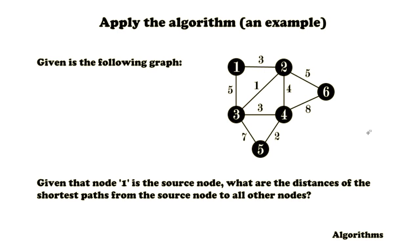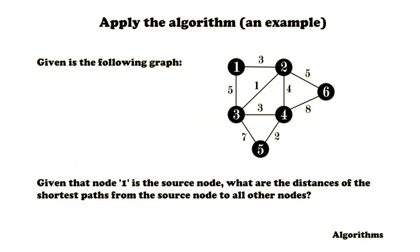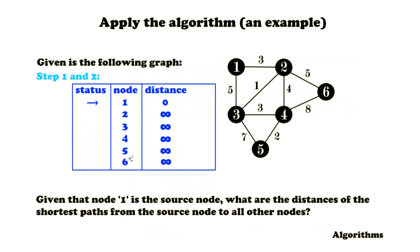Let's go together through the process of getting the answer. The first two steps are: create a table in which all nodes initially have a distance equal to infinity, set the source node's distance to zero, and mark the source node as in progress. Nodes 2 through 6 have a distance of infinity, node 1 has a distance of zero, and it's marked as in progress.